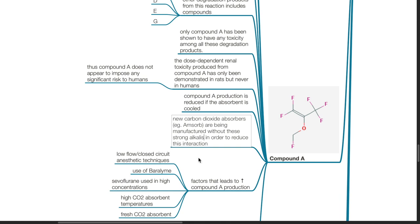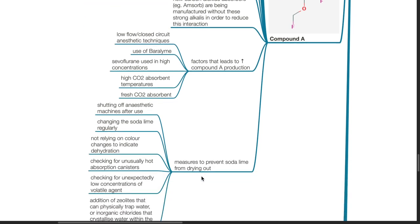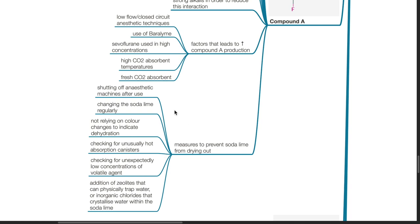New CO2 absorbers such as Amsorb are being manufactured without these strong alkalis in order to reduce this interaction. Factors that lead to increased compound A production: low-flow or closed-circuit anesthetic techniques, use of baralime, sevoflurane used in high concentrations, high CO2 absorbent temperatures, and fresh CO2 absorbent. Measures to prevent soda lime from drying out: shutting off the anesthetic machine after use, changing the soda lime regularly, not relying on colour changes to indicate dehydration, checking for unusually hot absorption canisters, checking for unexpectedly low concentrations of volatile agents, addition of zeolites that can physically trap water, or inorganic chlorides that crystallize water within soda lime.